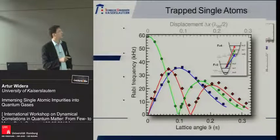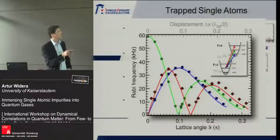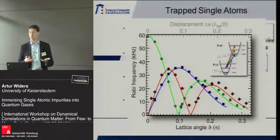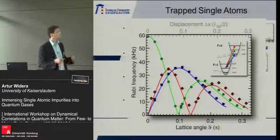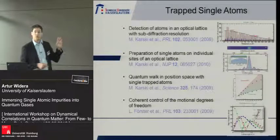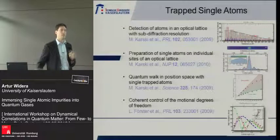In ion traps, the carrier transition is normally the strongest and sideband transitions are reduced by the Lamb-Dicke factor. We were able to engineer the Lamb-Dicke factor in our system. For example, we can make the carrier transition — shown in green — have the same strength as the red or blue sidebands, or completely suppress the carrier, and thereby use motional vibrational states as a qubit resource. This demonstrates we have a high degree of control over external and internal degrees of freedom.